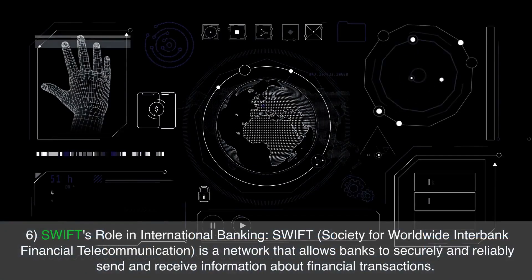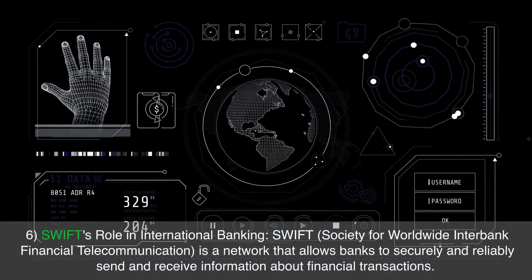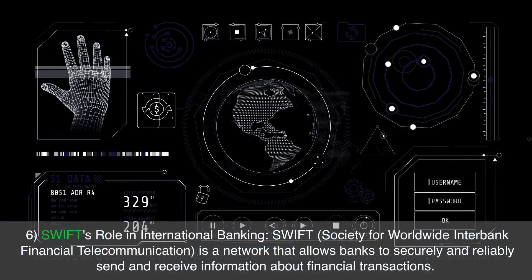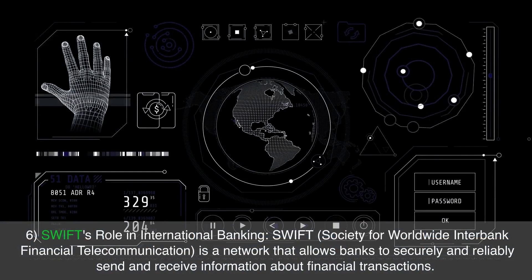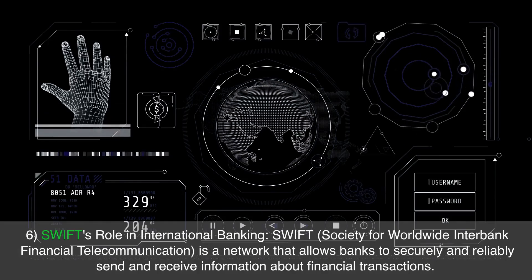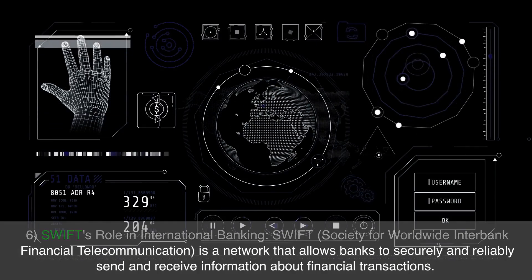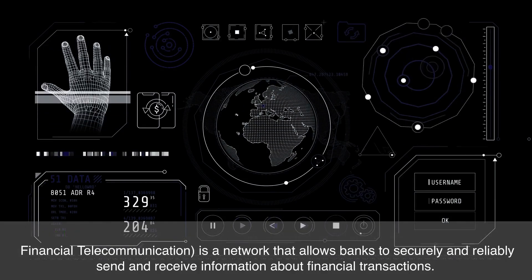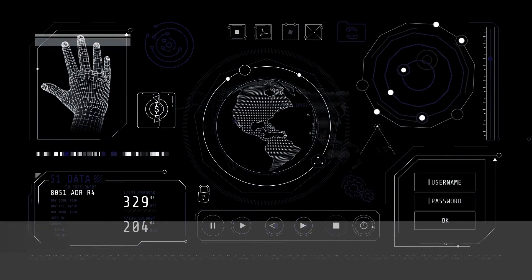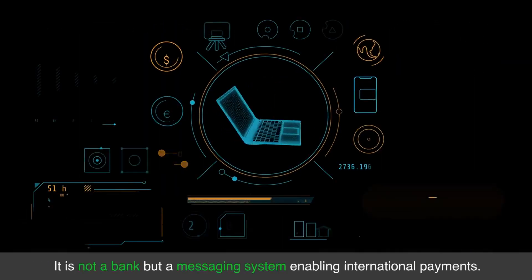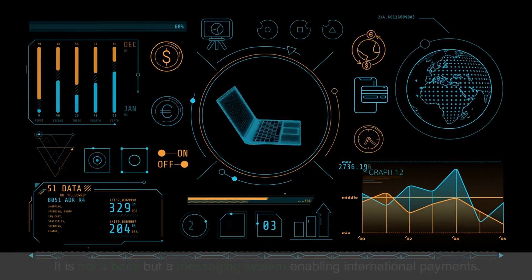SWIFT's role in international banking. SWIFT — Society for Worldwide Interbank Financial Telecommunication — is a network that allows banks to securely and reliably send and receive information about financial transactions. It is not a bank, but a messaging system enabling international payments.